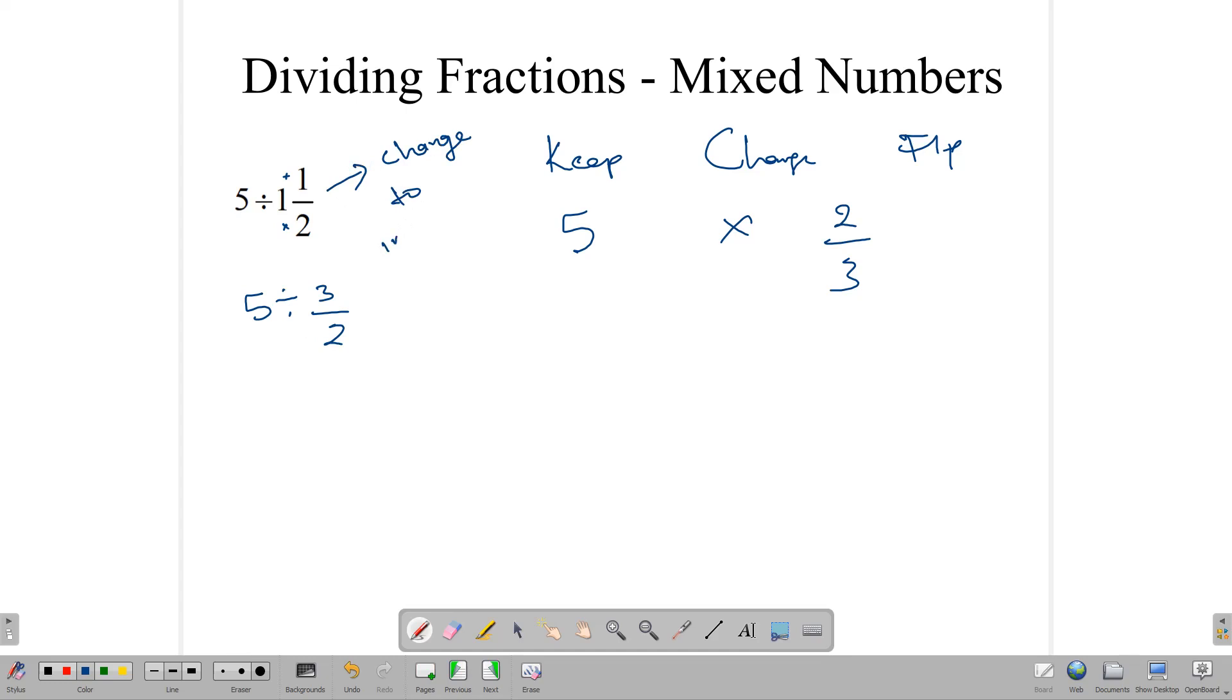So, change this one to improper. Change to improper. So, we want to do that first. It just makes things a lot easier. And then, we can simply go ahead and multiply. So, 5 times 2 thirds will give us 10 over 3. And that is the same thing as saying 3 and a third. So, how many 1 and a halfs can we take out of 5? We can take it out 3 and a third times.